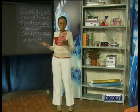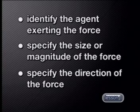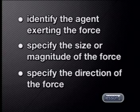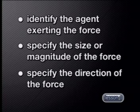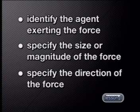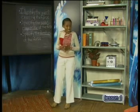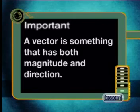It is important for you to remember that when we describe a force, we must first identify the agent that is exerting the force — in other words, what is exerting a force on a body or an object. Then we have to specify the size or magnitude of the force, as well as the direction of the force. This means that force is a vector — something that has both magnitude and direction.